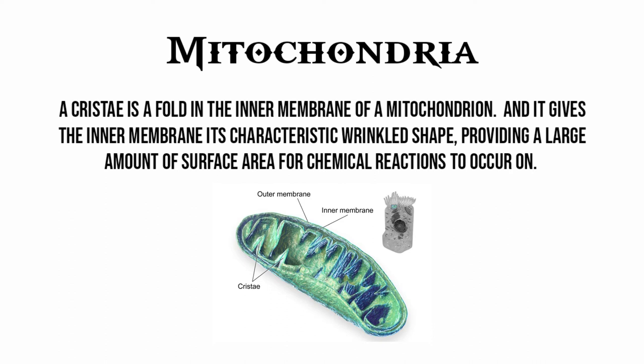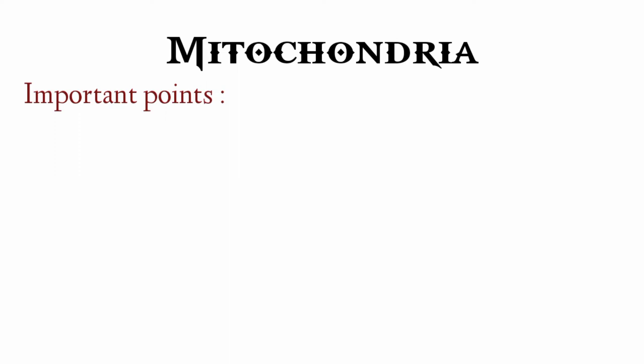A cristae is a fold in the inner membrane of a mitochondria, and it gives the inner membrane its characteristic wrinkled shape, providing a large amount of surface area for chemical reactions to occur on.